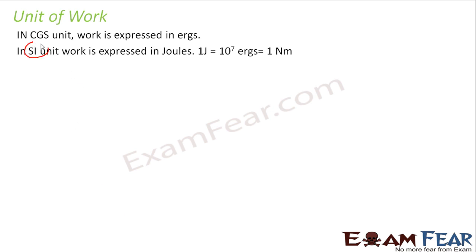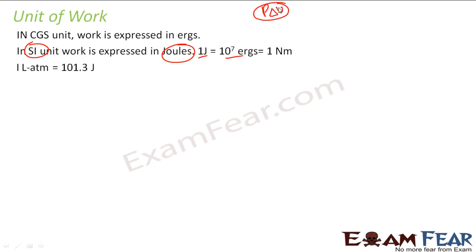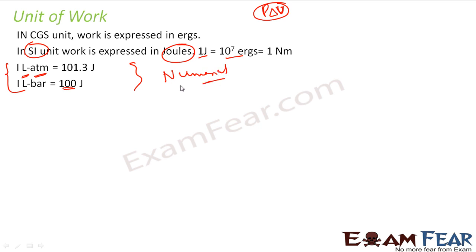Let me talk about various units of work. In CGS units, work is expressed in ergs; in SI units it is in joules, and 1 joule is 10 to the power 7 ergs. In many mathematical problems we will see that when we talk about work as P·ΔV, the pressure will be in atmospheres (atm) and volume in liters, so we get liter·atm. To convert to joules: 1 liter·atm = 101.3 joules. If the pressure is in bar, you get liter·bar, and 1 liter·bar = 100 joules. We will generally try to convert work into joules for numericals.